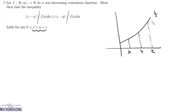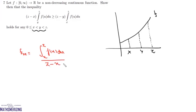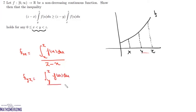What we'll do is find the average value of this function in the interval [x, z], given by (1/(z − x)) ∫[x to z] f(u) du. We'll also find the average value of this function in the interval [y, z], given by (1/(z − y)) ∫[y to z] f(u) du.